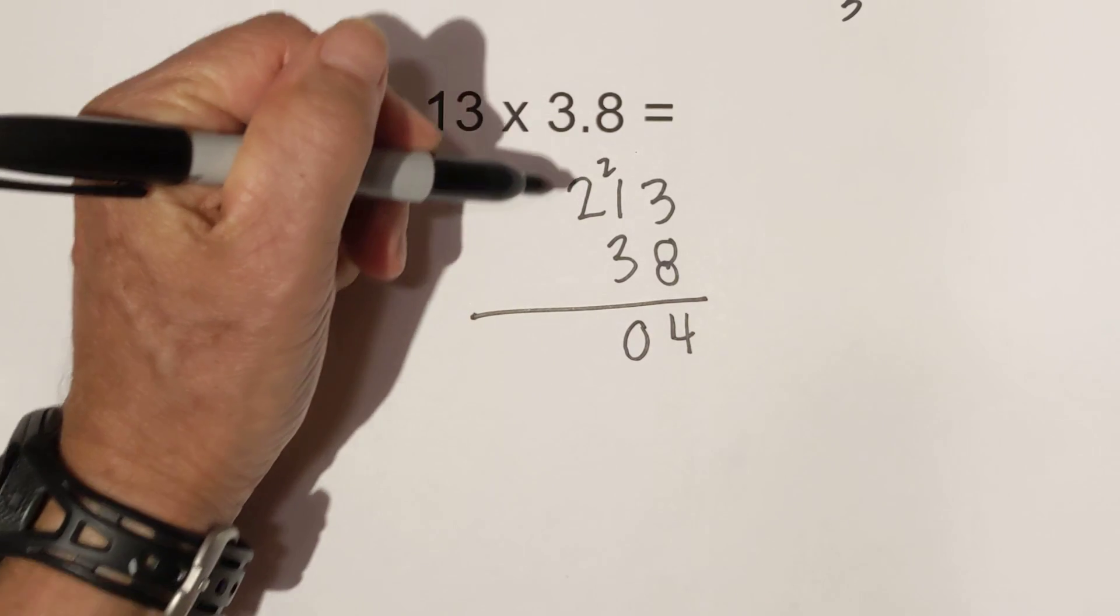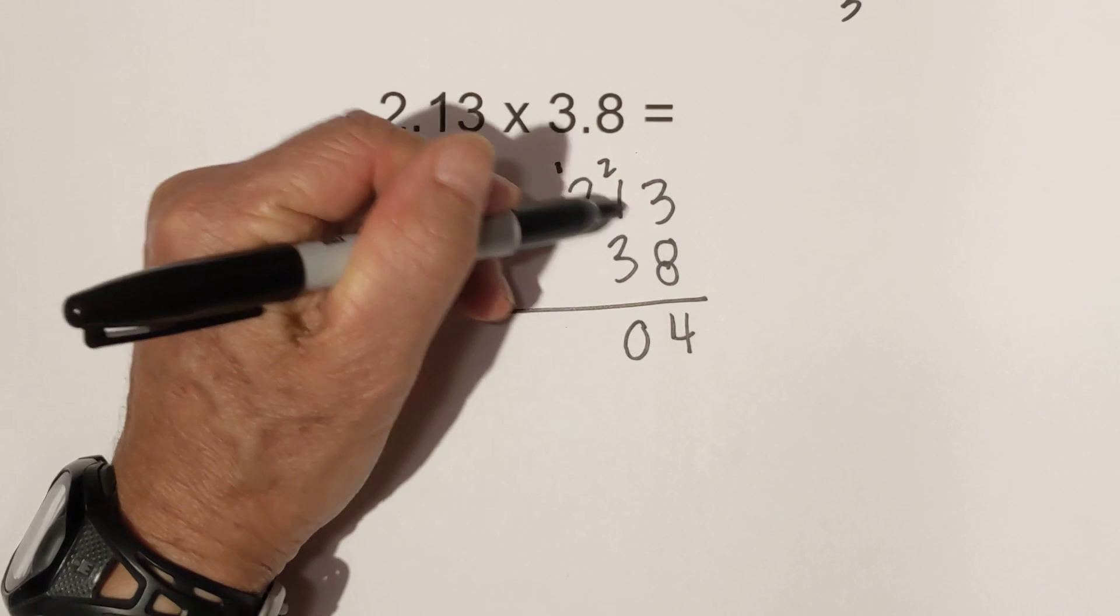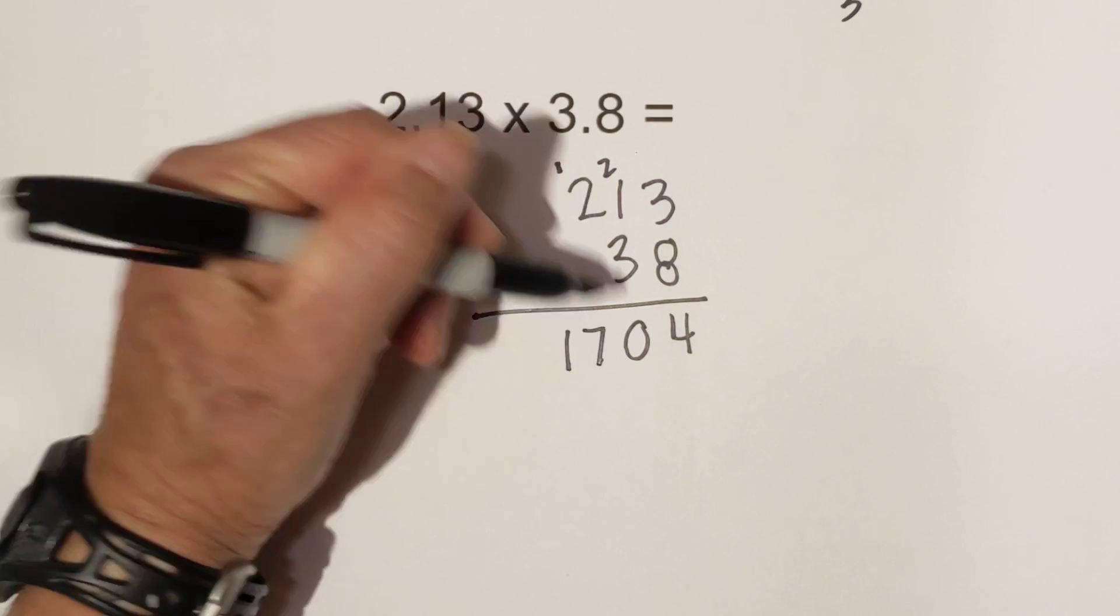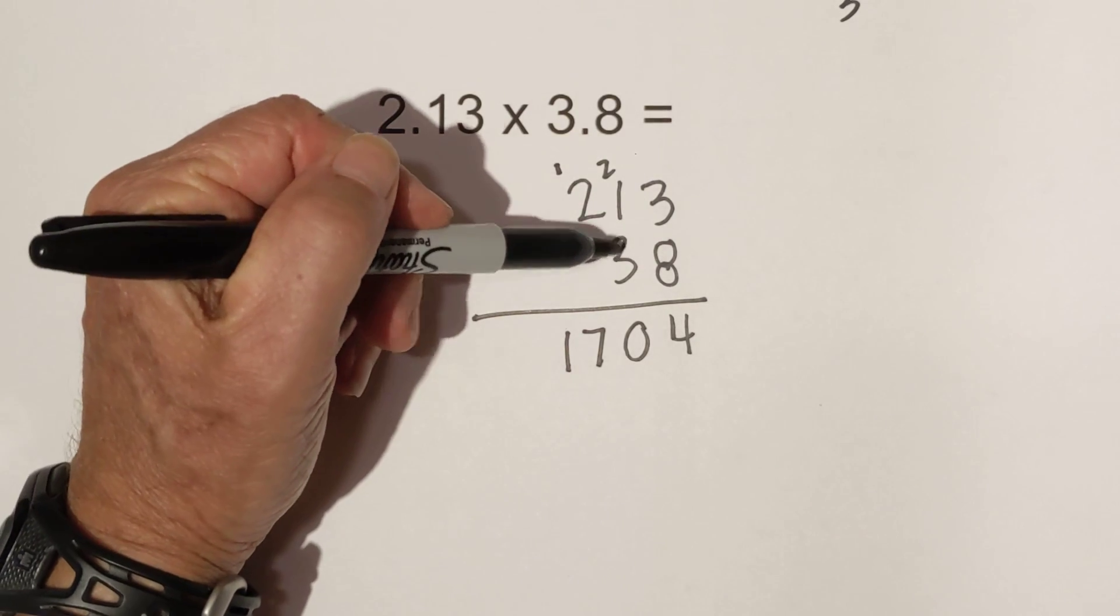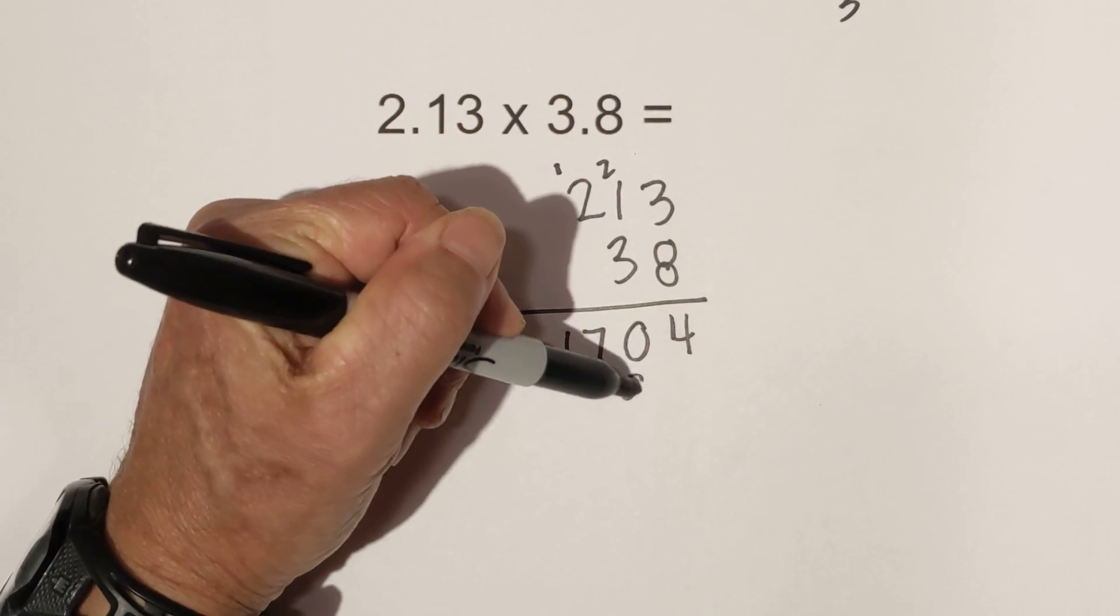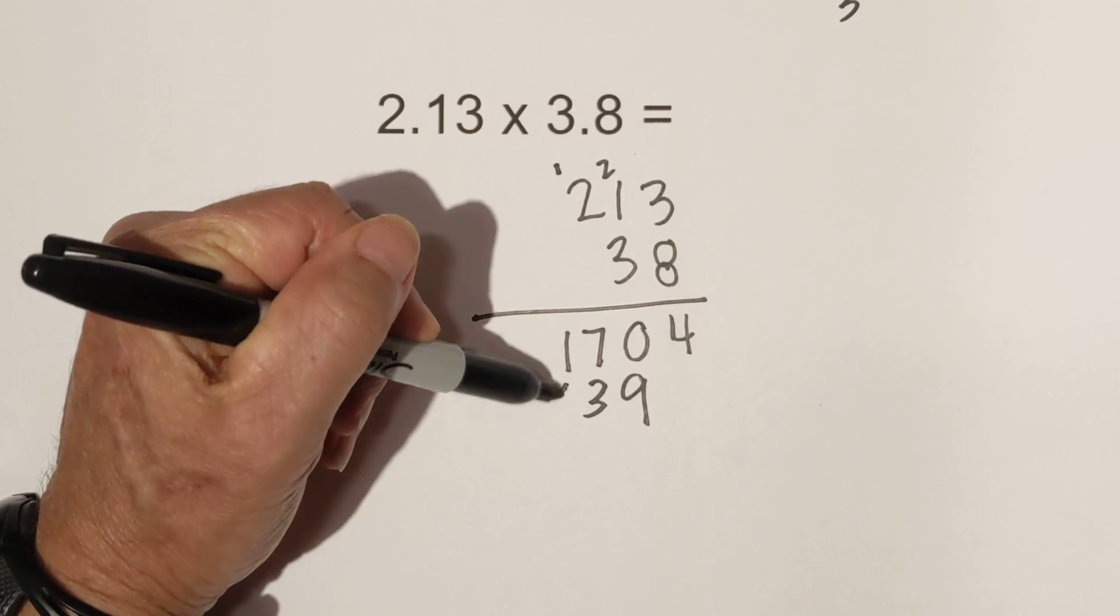And then now let's multiply the 3. That is 9, 3 times 1 is 3, 3 times 2 is 6.